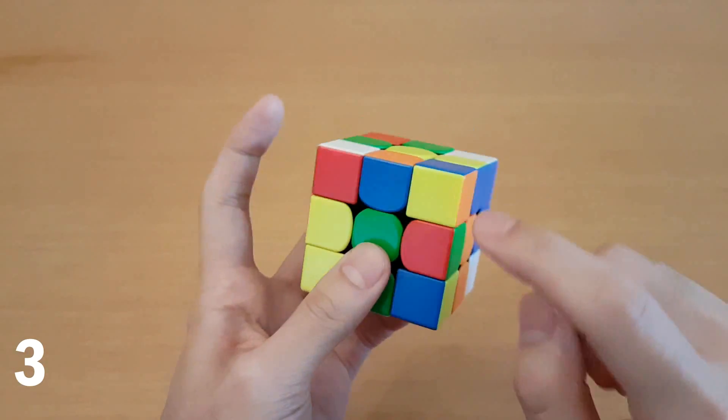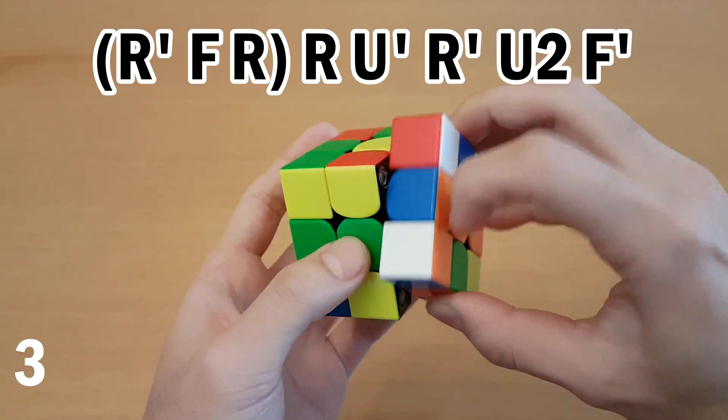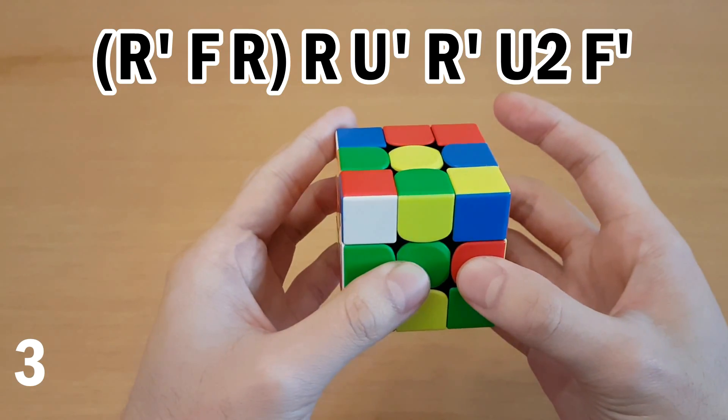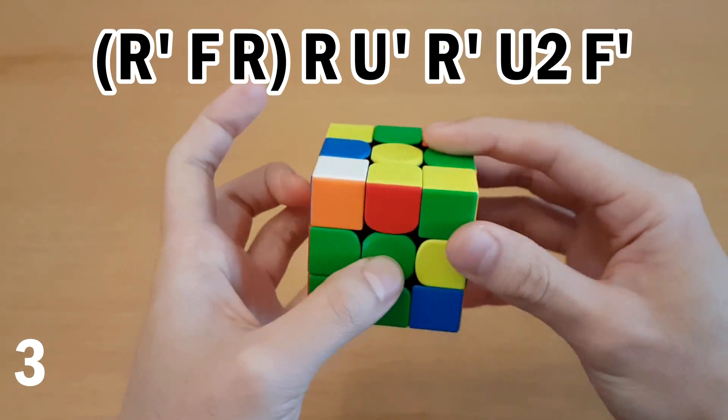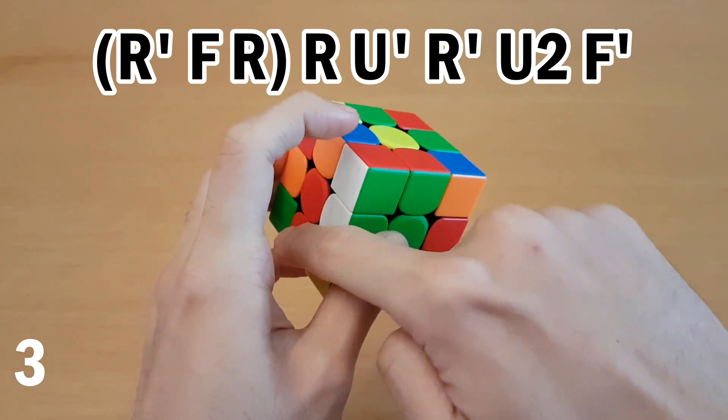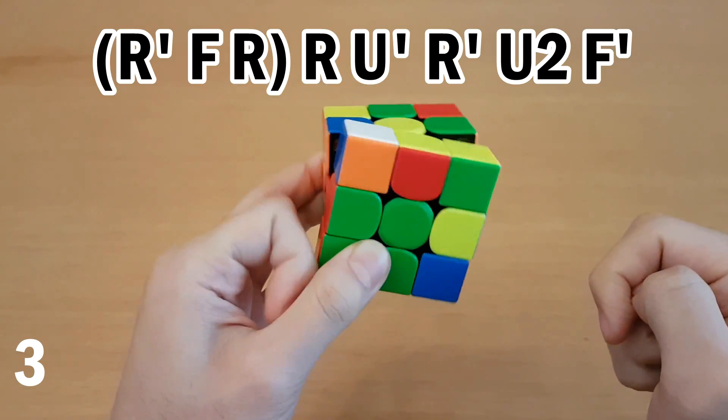From here you can do a similar idea, where you start with sledgehammer on these two, and then instead of finishing the sledgehammer, you continue and pair these together, and then do U2 with your left hand, and then F'. You can do U2 with your right hand, and then do F' here, make sure that you hold your pinky underneath the S slice so it doesn't move.